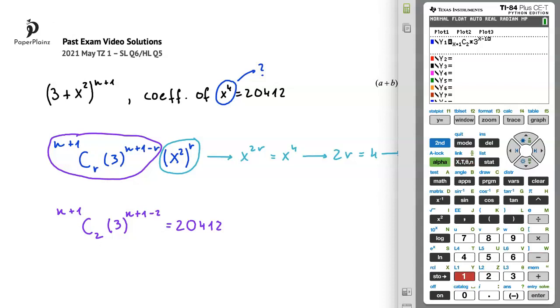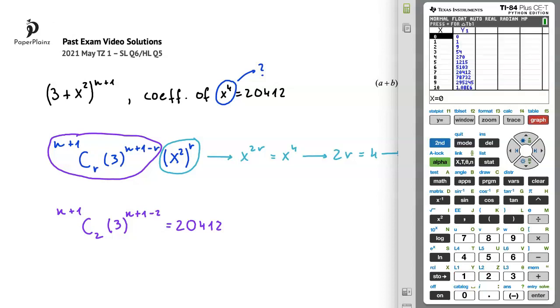Now, instead of graphing, I will go to table, so press second and graph. On the right-hand side of our equation, we have 20,412, so this is the value that we have to look for in the second column. We see this number when x is equal to 7, which means that our solution is n equals 7.